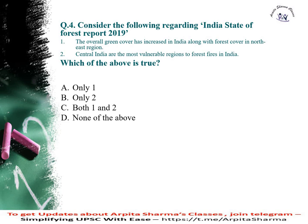Consider the following regarding India's State of Forest Report 2019. First, the overall green cover has increased in India along with the forest cover in the northeast region. Second, central India is the most vulnerable region to forest fires in India. Which of the above is true as per India's State of Forest Report 2019?